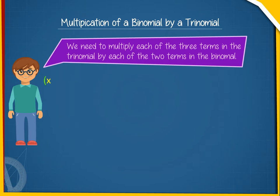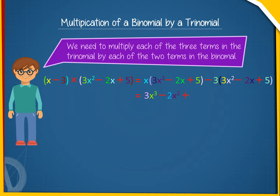x minus 3 into 3x squared minus 2x plus 5 equals 3x cubed minus 2x squared plus 5x minus 9x squared plus 6x minus 15.